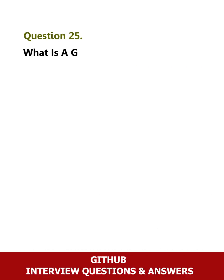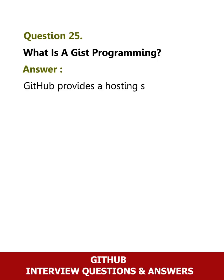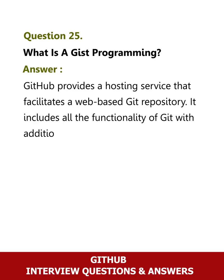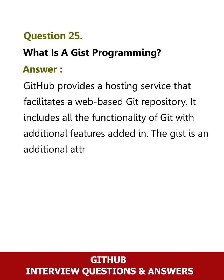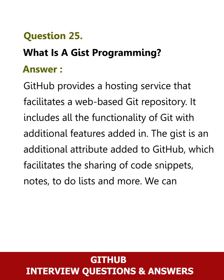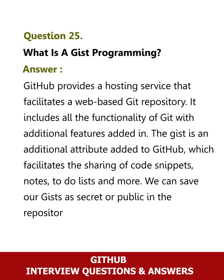Question 25: What is a gist in programming? Answer: GitHub provides a hosting service that facilitates a web-based Git repository, including all the functionality of Git with additional features. A gist is an additional attribute added to GitHub which facilitates the sharing of code snippets, notes, to-do lists, and more. We can save our gists as secret or public in the repository.